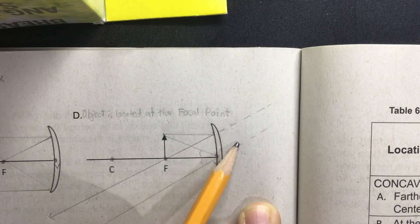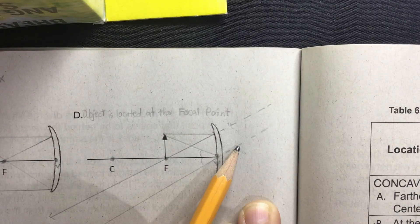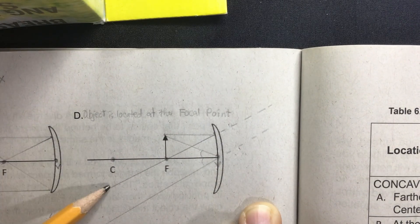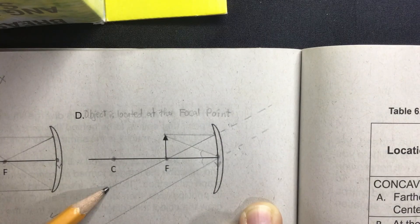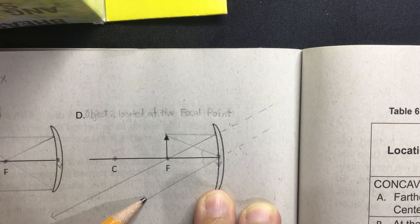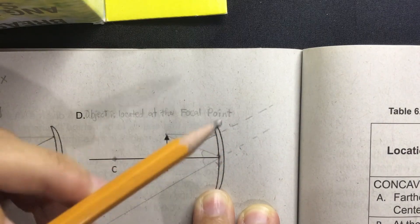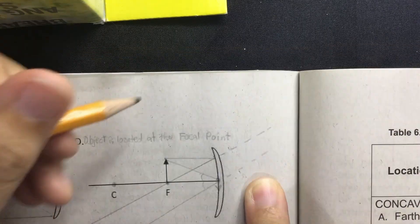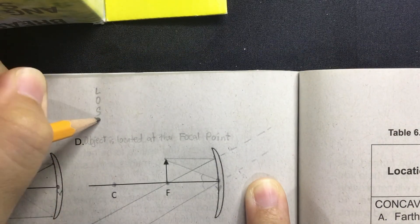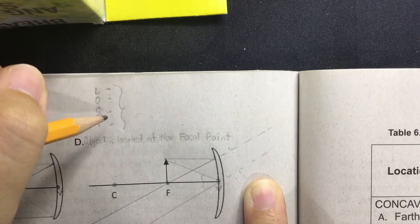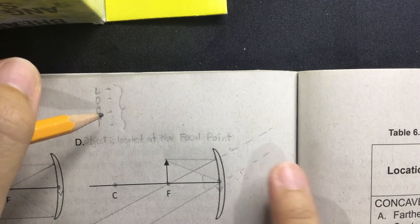So what does it mean? Where is our image located? The image is not formed in front of the mirror. At the same time, there is no image formed at the back of the mirror. So how do we describe the image? This time it means that we cannot describe it since there is no image.